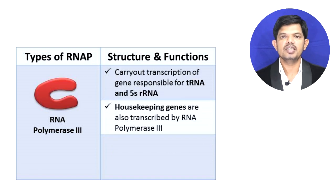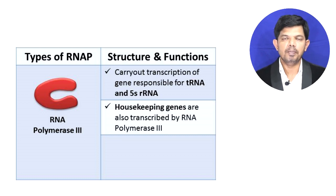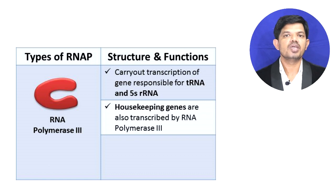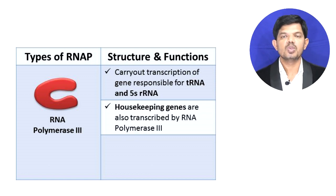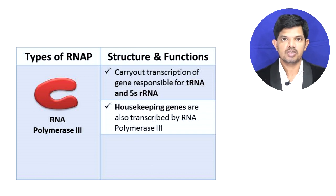RNA polymerase 3 makes tRNA and 5S rRNA. Housekeeping genes undergo transcription in each and every cell at all times, and RNA polymerase 3 helps in the transcription of these housekeeping genes.